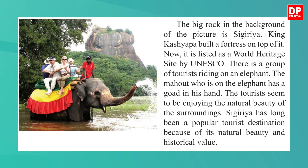The second picture is of Sigiriya. The big rock in the background is Sigiriya — King Kashyapa built a fortress on top of it, and now it is listed as a World Heritage Site by UNESCO. There is a group of tourists riding on an elephant; the mahout has a goad in his hand. The tourists seem to be enjoying the natural beauty of the surroundings. Sigiriya has long been a popular tourist destination because of its natural beauty and historical value.